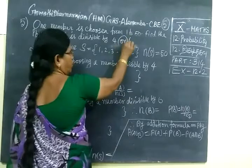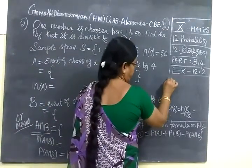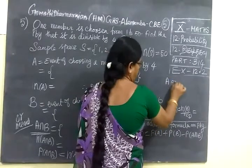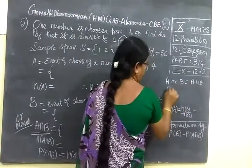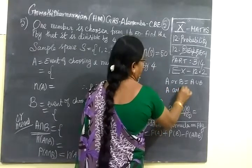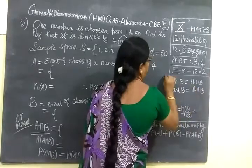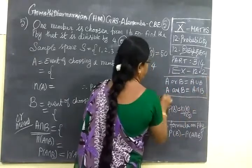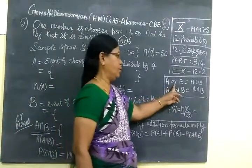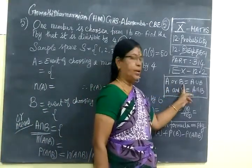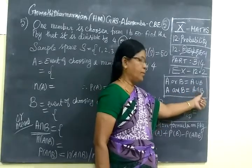Here it is given OR. OR means in set language itself we have seen A or B. Means A union B. A and B. OR means A union B. In the first chapter we have seen this. A or B, A and B. That means A union B.